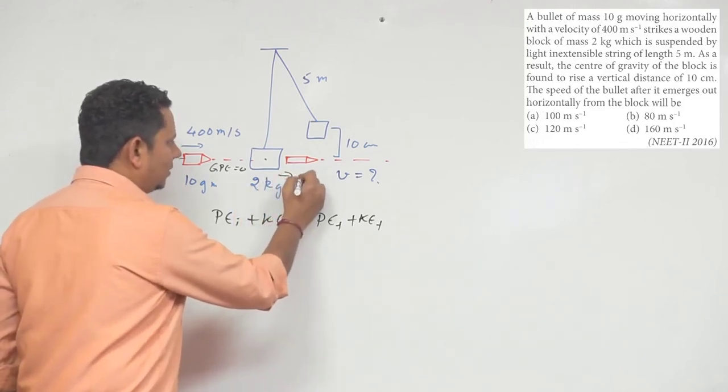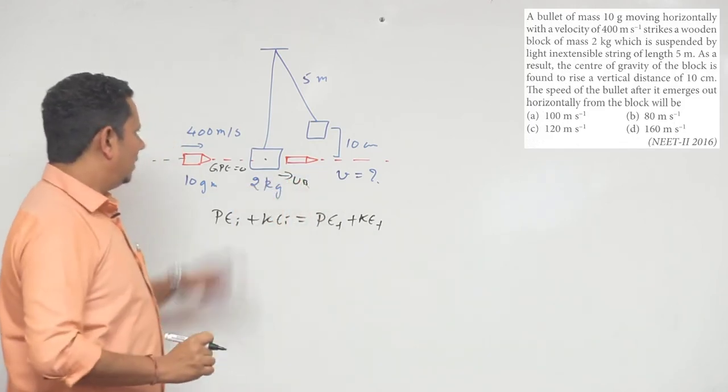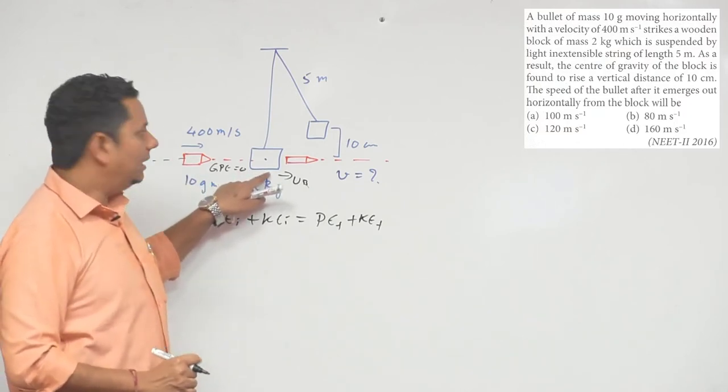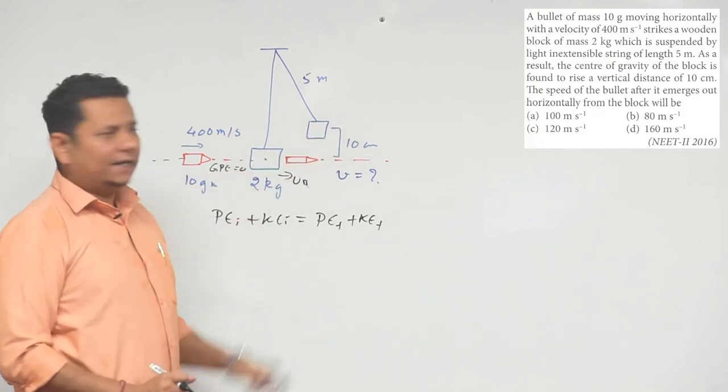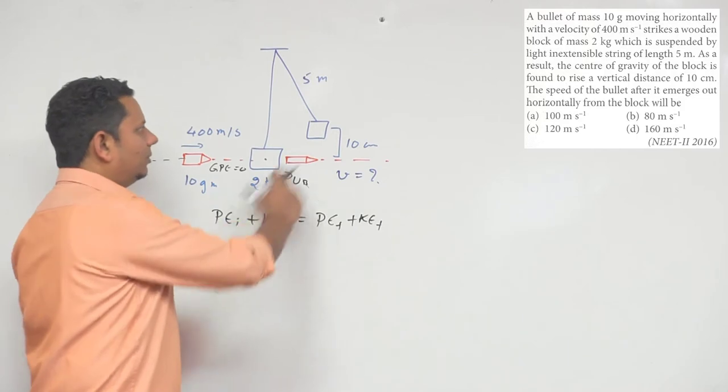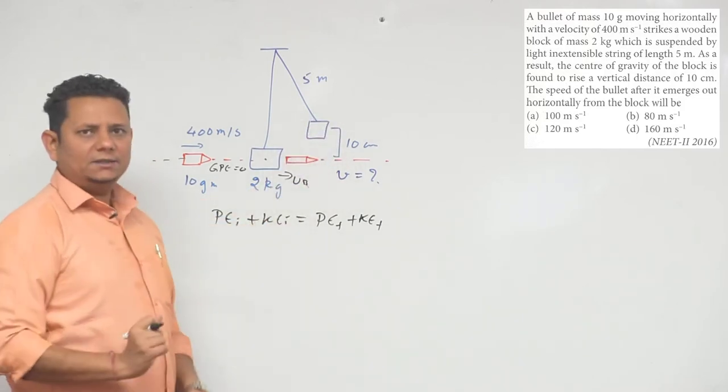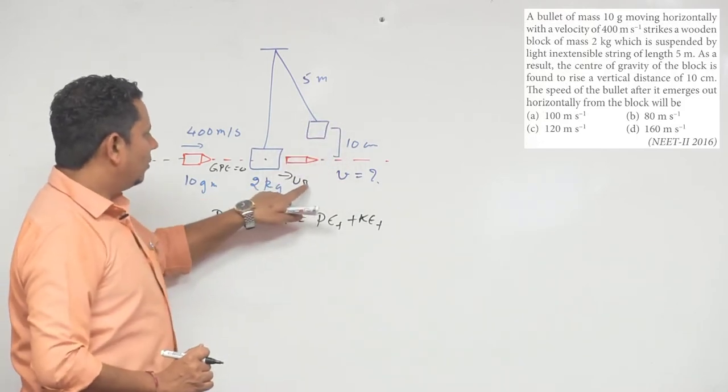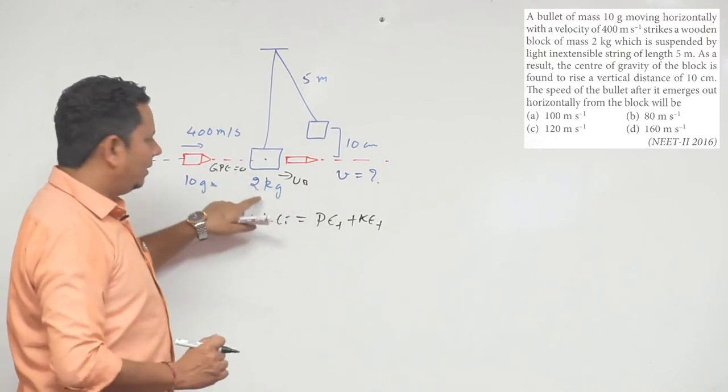that causes it to rise. If we take this as the initial position and that as the final position in energy conservation, we can find the block's velocity after impact. Here, your initial potential energy is zero plus its kinetic energy, which is half m